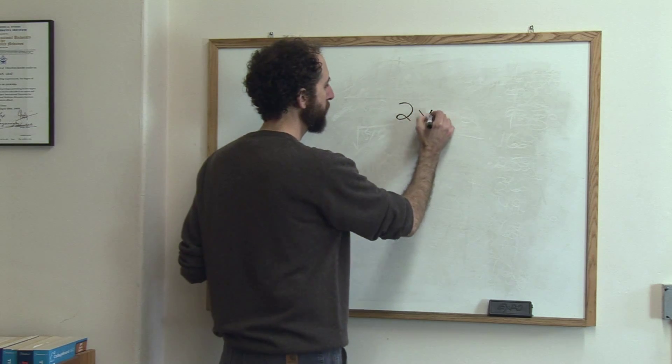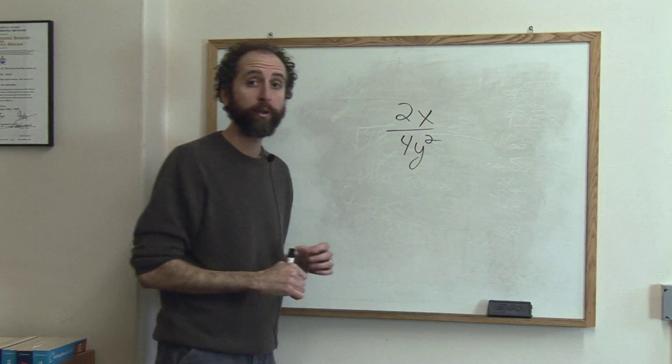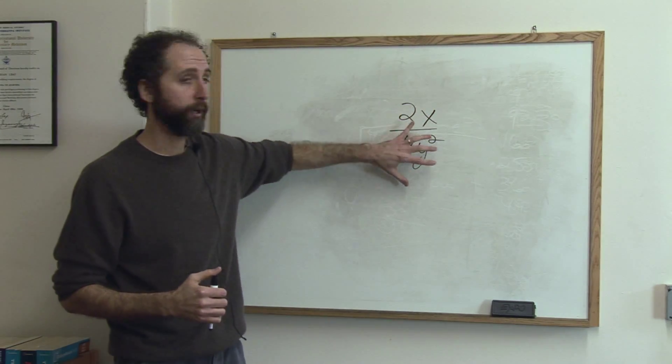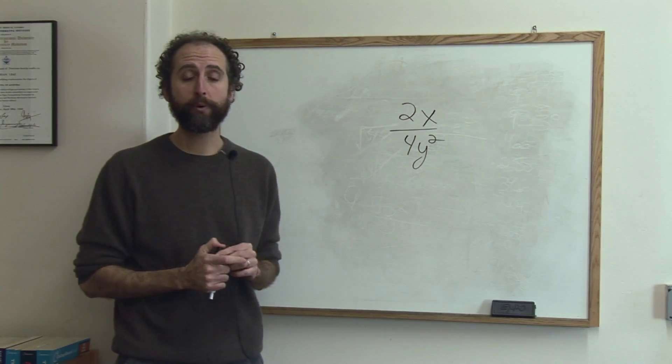If we had 2x to 4y squared, that'd be an algebraic ratio. It's a ratio because it's a number over another. It's a fraction. It's algebraic because there's variables.